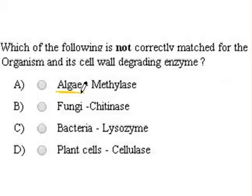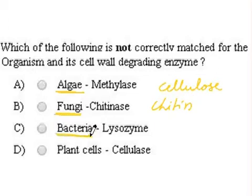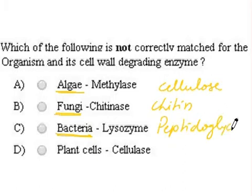In algae, the cell wall is made up of cellulose. In case of fungi, it is made up of chitin. In case of bacteria, the cell wall is made up of peptidoglycan. And in case of plants, again it is made up of cellulose.